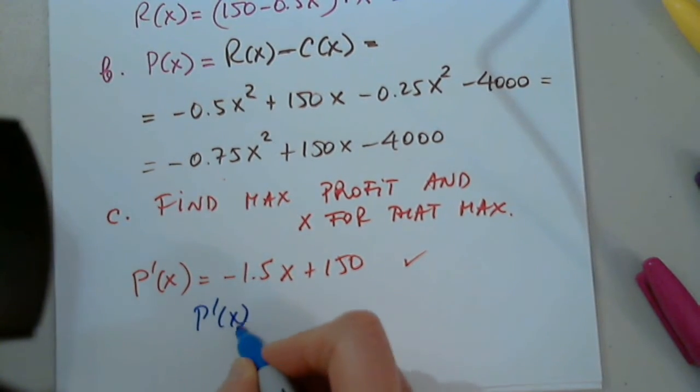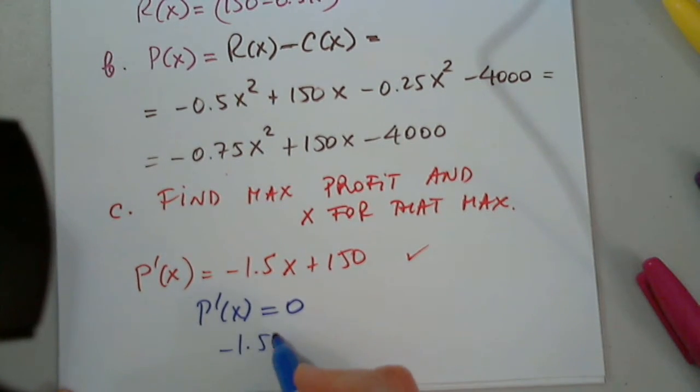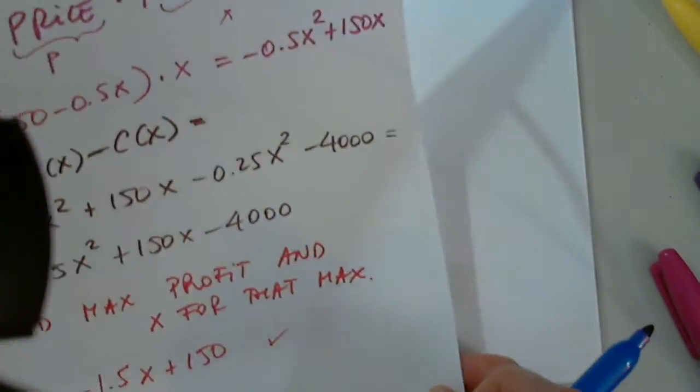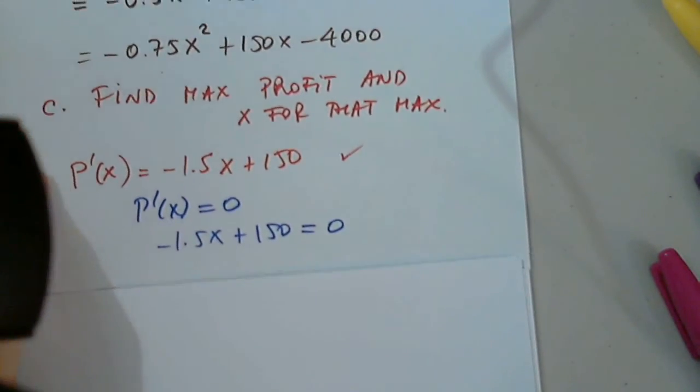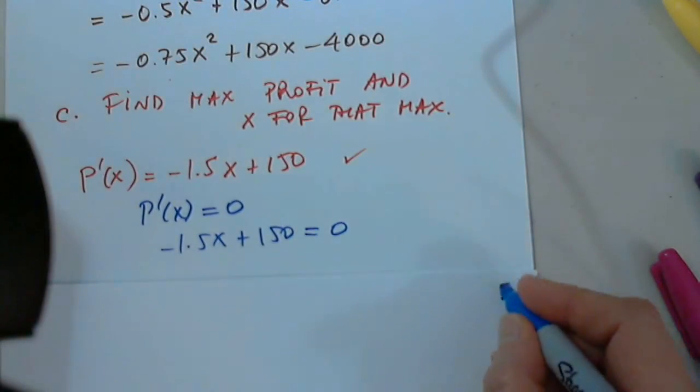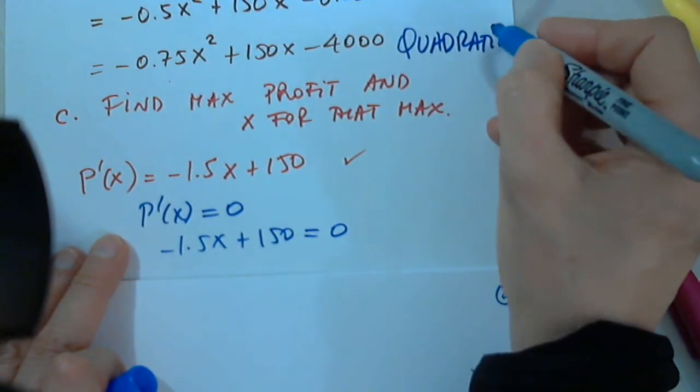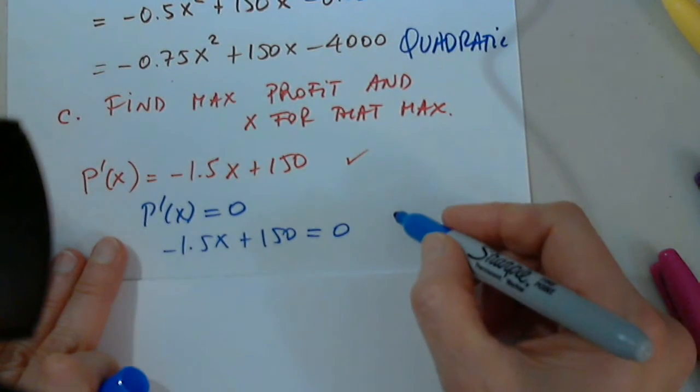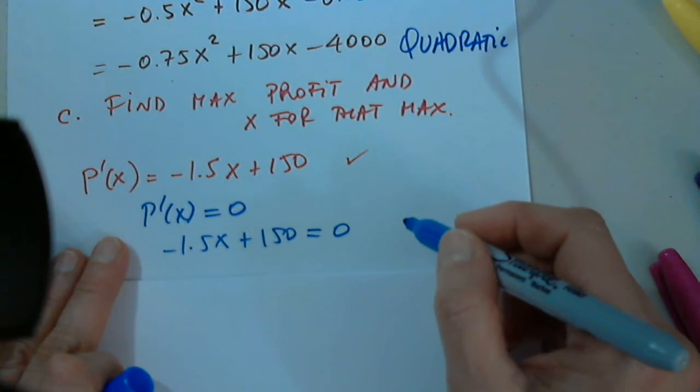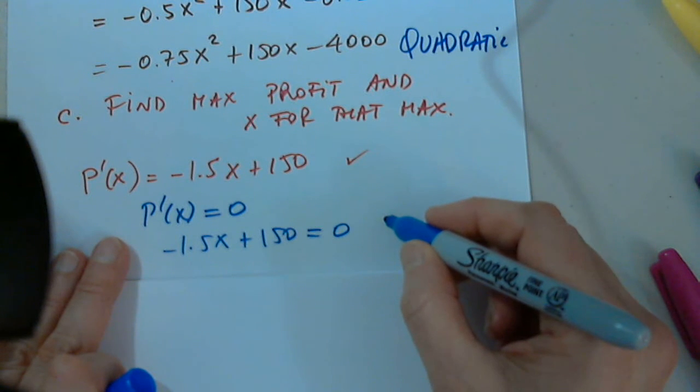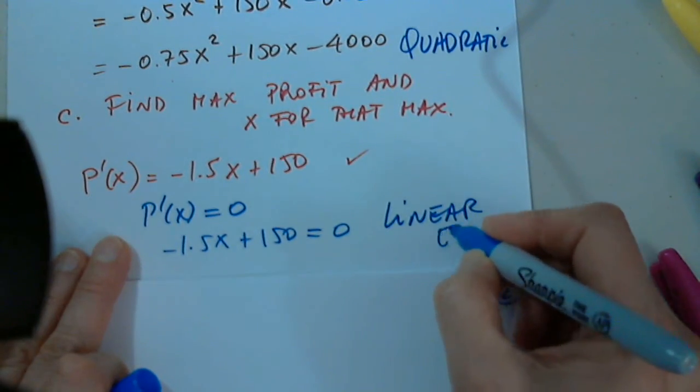You said zero. Very good. Very good. Jackson, thank you. So, P prime of X equals zero. So, negative 1.5X plus 150 equals zero. Can anyone identify this equation for us? Right, but what type of equation is this? So, this one was quadratic function. Well, what type of equation is this? The simplest possible one that you learned in first grade school? Anyone? Very good. This is a linear equation.